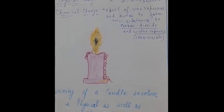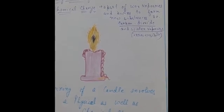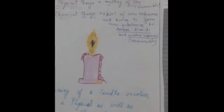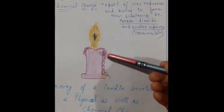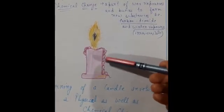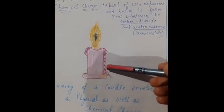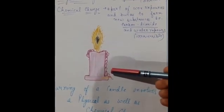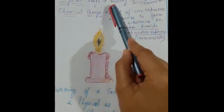The melting of the wax is a physical change — the wax first melts into liquid form and then solidifies again. There is a change in the state of matter, so a physical change takes place.